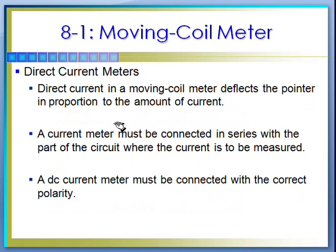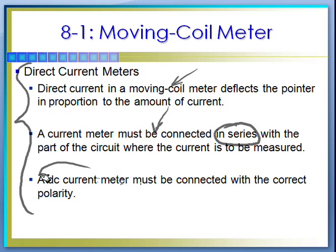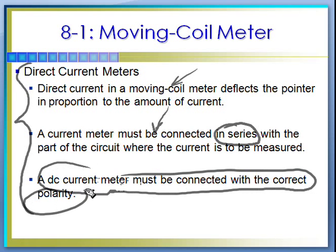When we are using the current meter function — in this case a DC direct current meter — the direct current in a moving coil meter deflects the pointer in proportion to the amount of current you're putting through it. The current meter must be connected in series with the part of the circuit you're measuring, whether it's analog or digital. To get the right reading, you have to be connected with the correct polarity — your negative side goes to your lowest potential, your positive side to your higher potential.